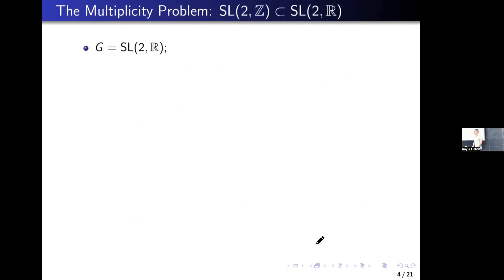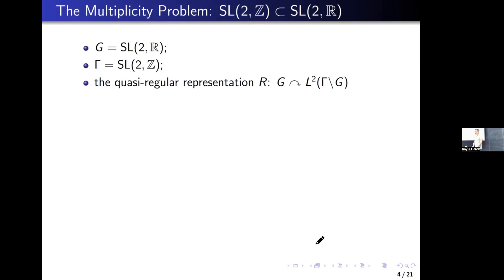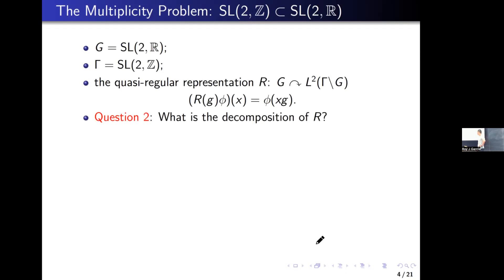Now we move to the Lie group case. SL2R is no longer a finite group and is not compact. We assume G is SL2 over the real field and we take the classical lattice gamma = SL2 over the integers. We also consider the quasi-regular representation denoted by R — the G action on the quotient space. The same question arises: what is the decomposition of this quasi-regular representation? Unfortunately, we do not have a direct sum decomposition; it is not a direct sum. We cannot decompose R as any direct sum.